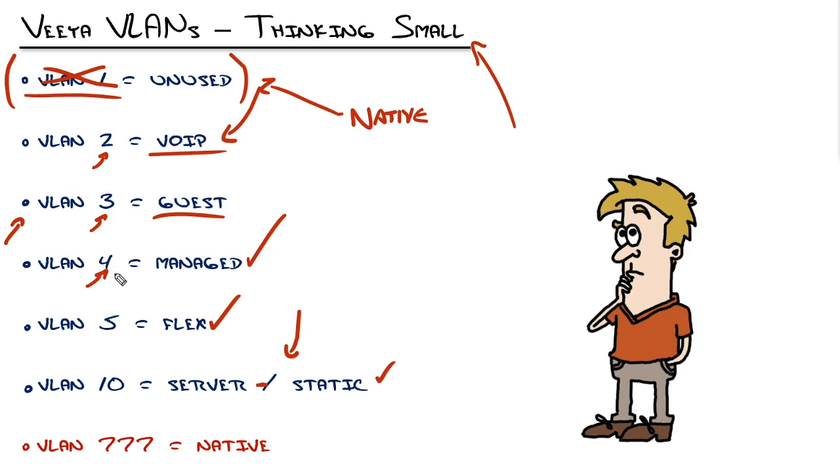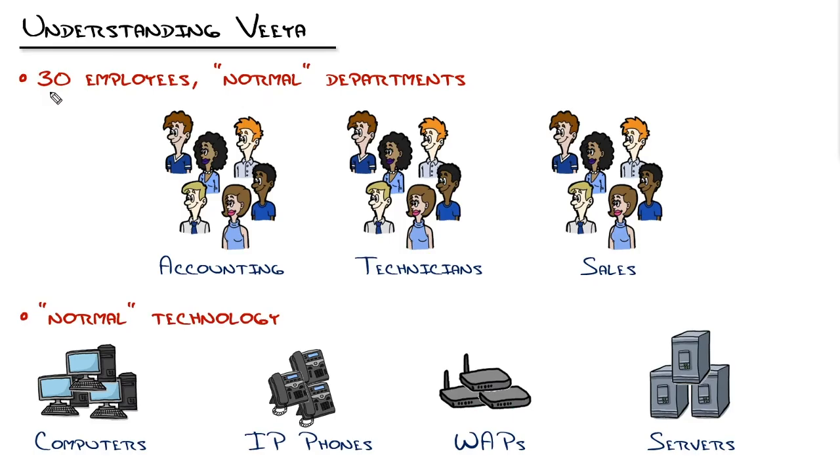Don't hear me wave a flag and say you should never think small. If you have an organization like VIA that has 30 employees, nothing really crazy when it comes to technology, then thinking small is an okay thing to do.